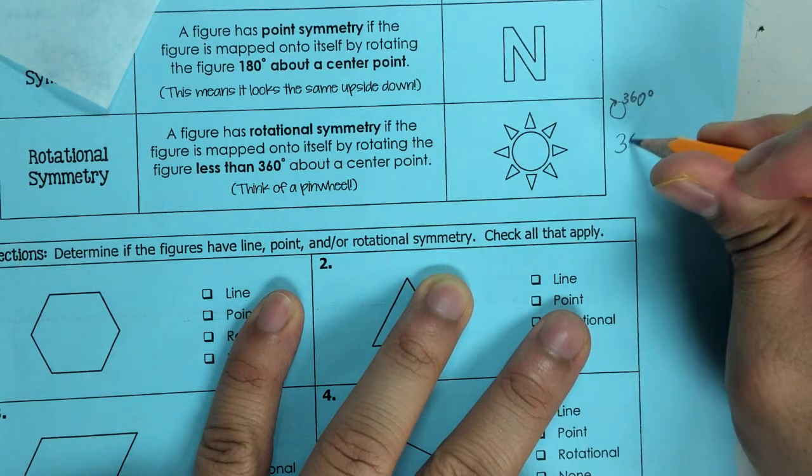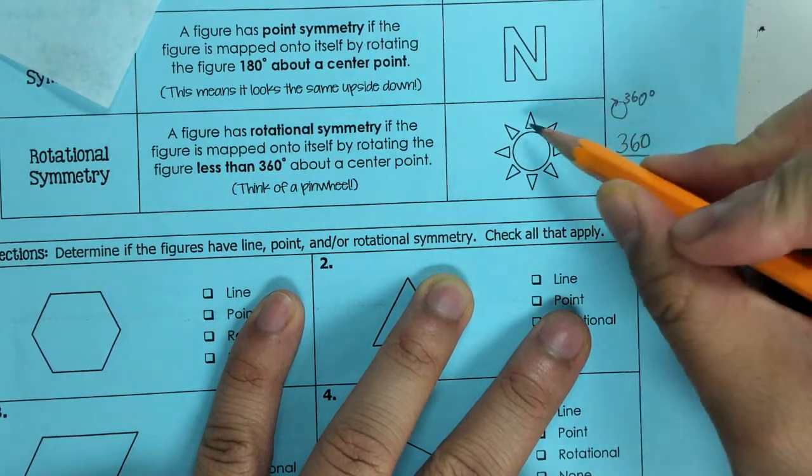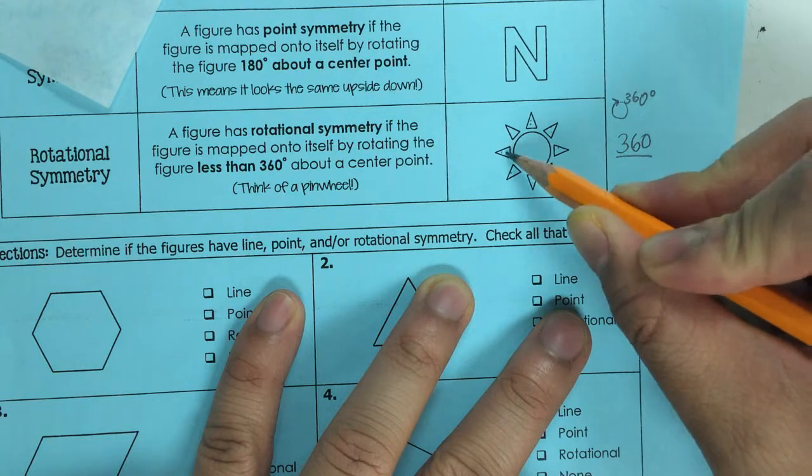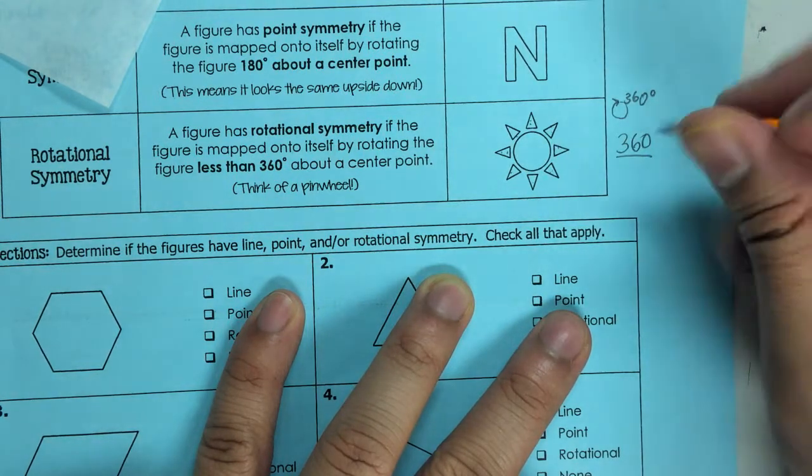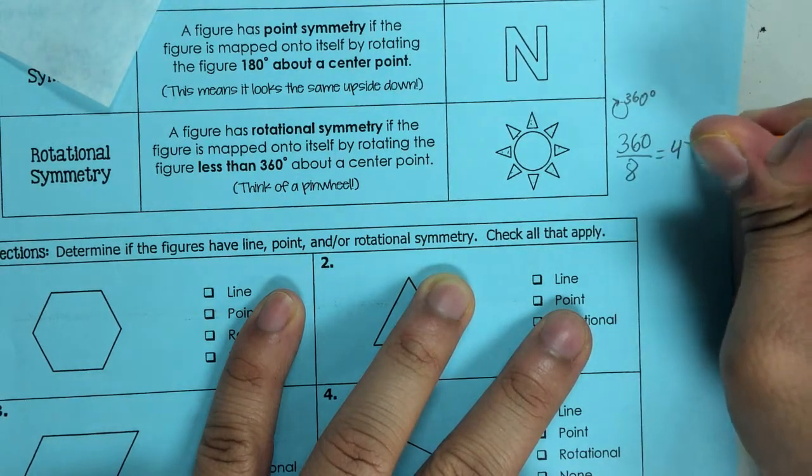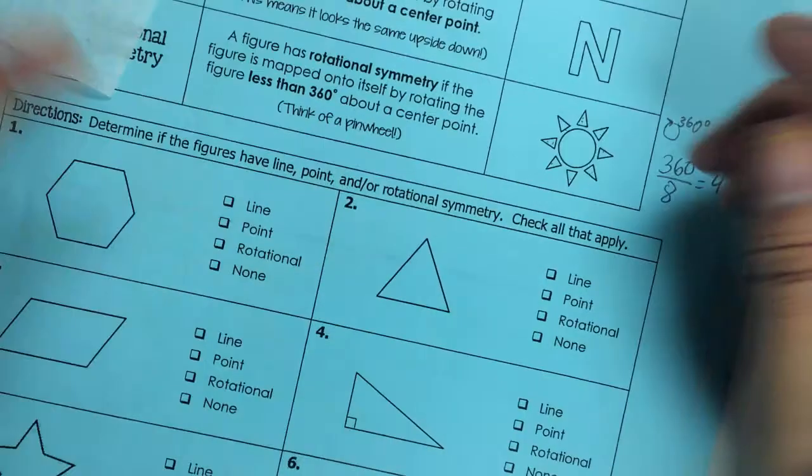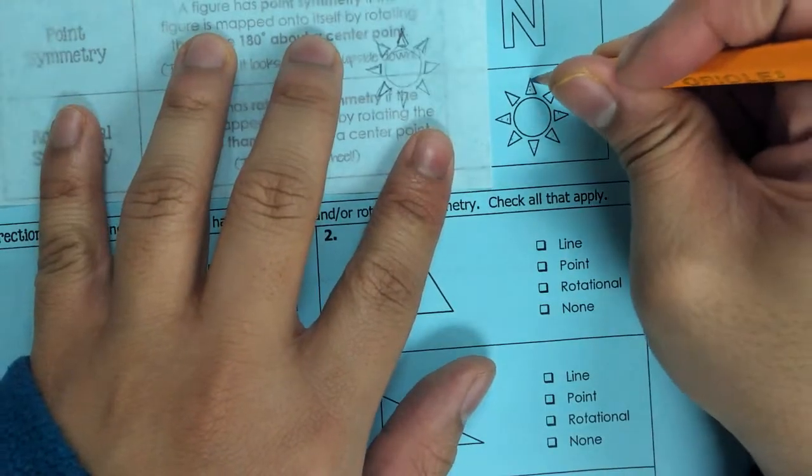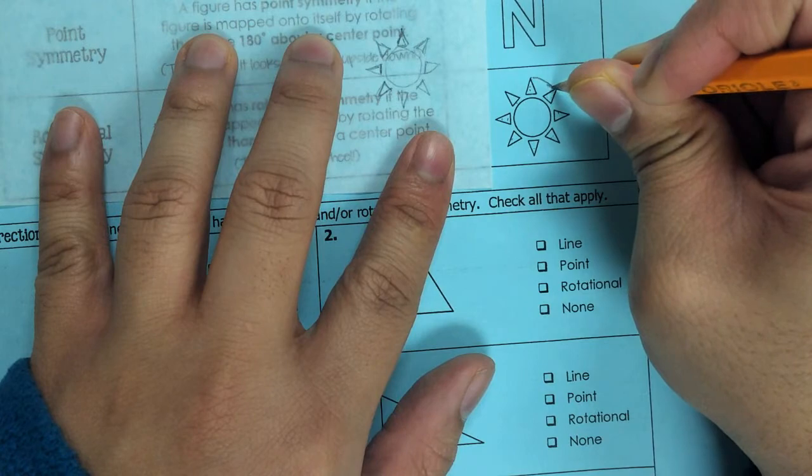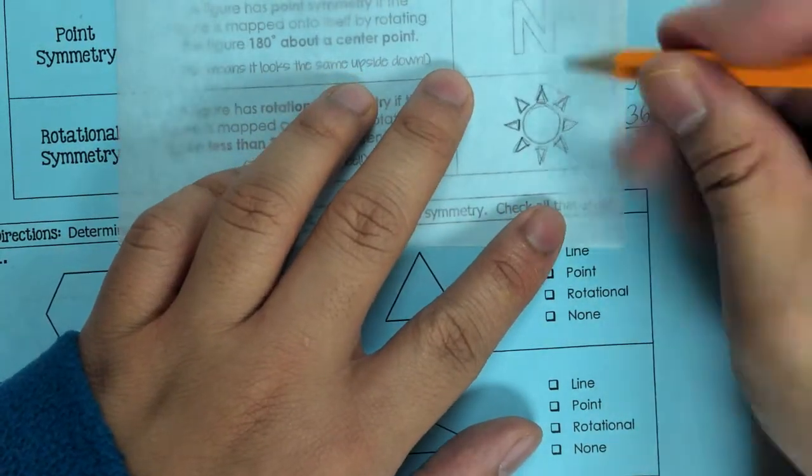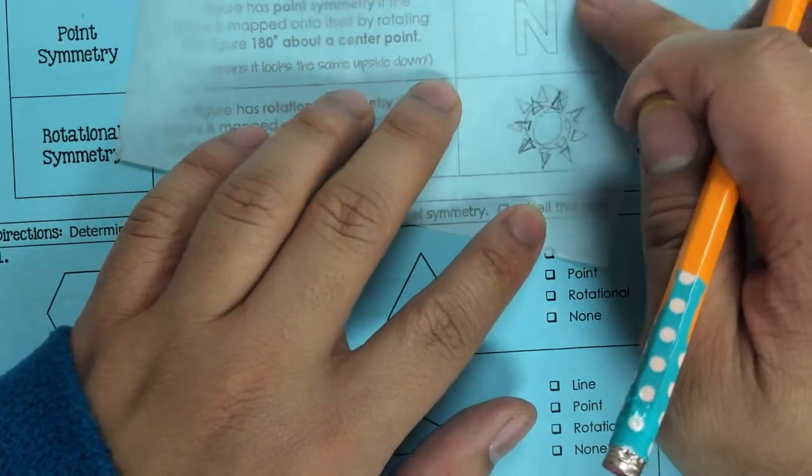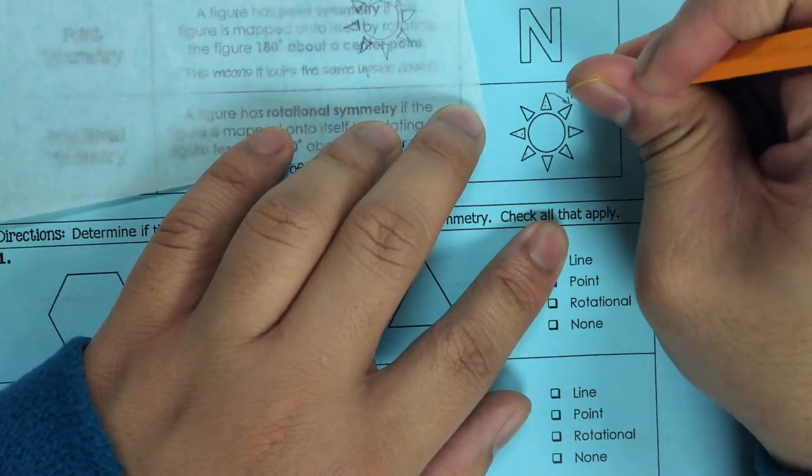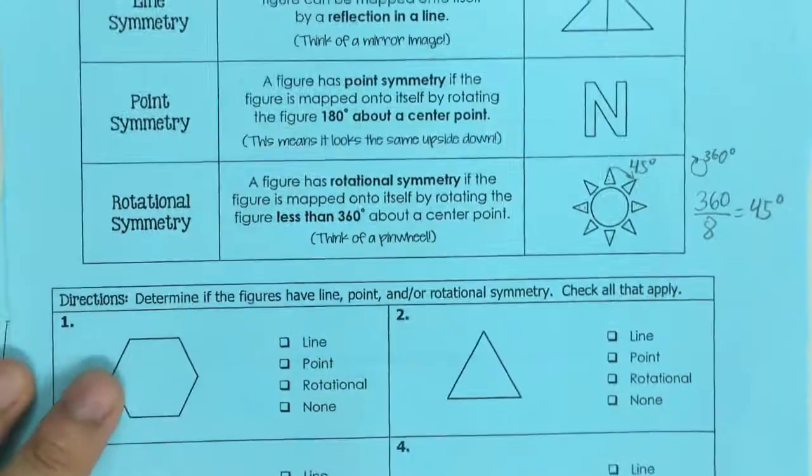We have one, two, three, four, five, six, seven, eight - eight equal sides. So 360 divided by 8 gets me 45. What this means is to get this top part over to this side, from here to there is a 45 degree turn. That's 45 degrees.